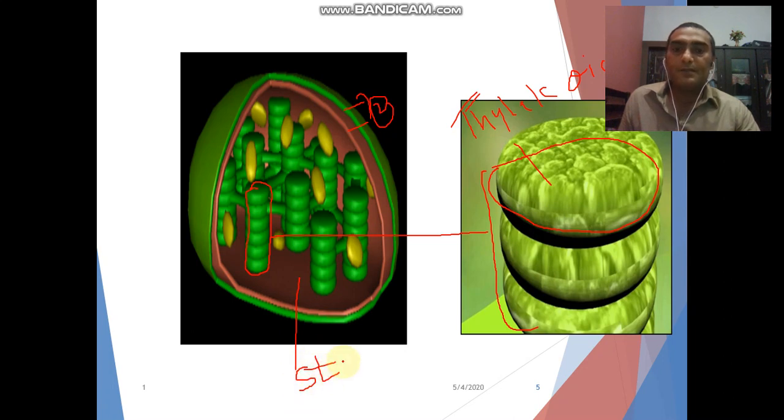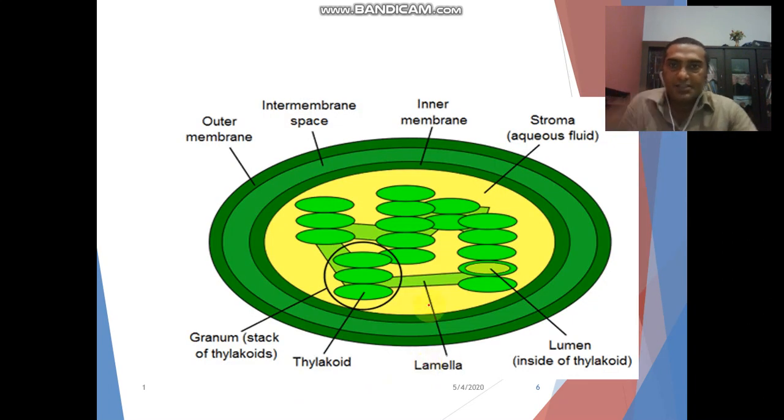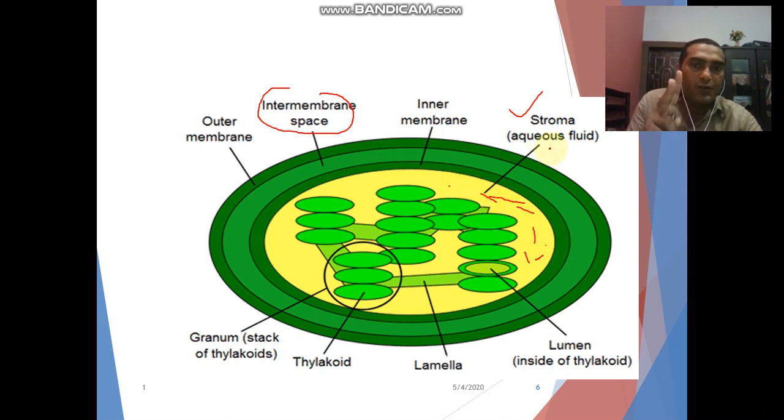This is stroma. Stroma possesses its own DNA, stroma possesses their own ribosomes, their own enzymes for the photosynthesis, because these are semi-autonomous structures. These are intermembranous space, it's between two membranes, outer and inner. This is outer membrane and this one is an inner membrane. And this is stroma, this space, free space or we can say the fluid-like structure is known as stroma. It possesses DNA, it possesses own fluids, it possesses their own ribosome, enzyme, etc.